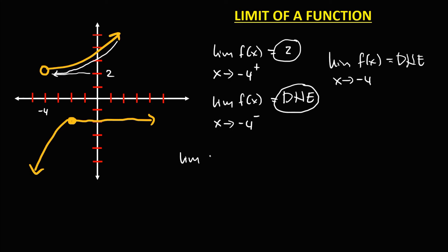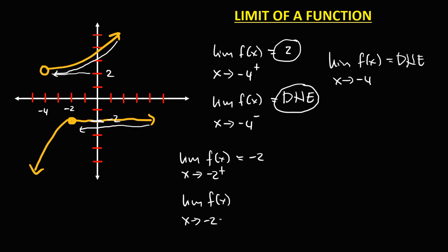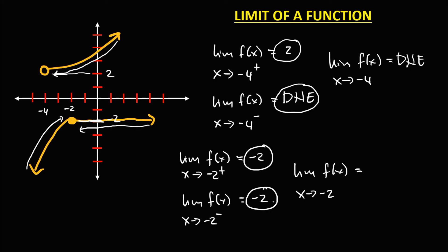For the limit of f of x as x approaches negative 2 from the right — this is the right of negative 2 — the limit is equal to negative 2. And for the limit of f of x as x approaches negative 2 from the left — this is the left of negative 2 — the limit is equal to negative 2. Since the right-side limit is equal to the left-side limit, this limit of f of x as x approaches negative 2 is also negative 2.